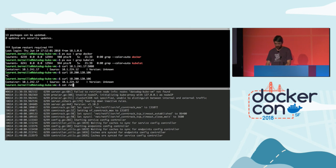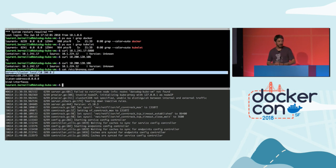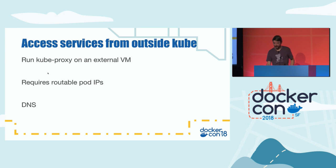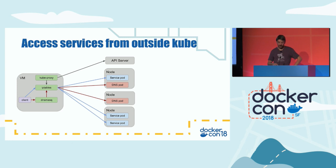I also installed dnsmasq on the machine, configured so all addresses ending in 'cluster.local' — the Kubernetes domain — are sent to the DNS service IP. Now I'm able to connect to the service in the remote cluster by DNS name. kube-proxy gets information from the API server, configures IP tables so the client can reach the pods, and the DNS pod handles name resolution, with IP tables routing DNS traffic to one of the pods providing DNS.